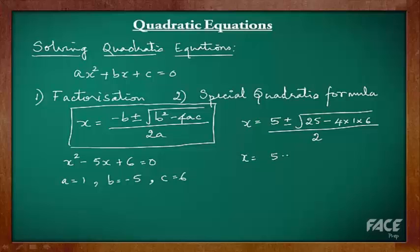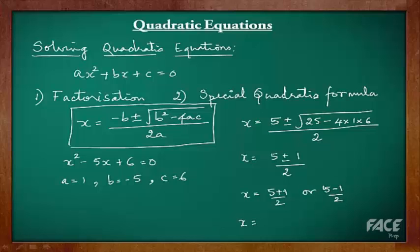Simplifying further: 5 ± √(25 - 4×1×6) divided by 2. Since 4×1×6 = 24, and 25 - 24 = 1, √1 = 1, divided by 2. So x = (5 + 1)/2 or (5 - 1)/2, giving x = 6/2 = 3 or x = 4/2 = 2 — the same roots we got using the factorization method.